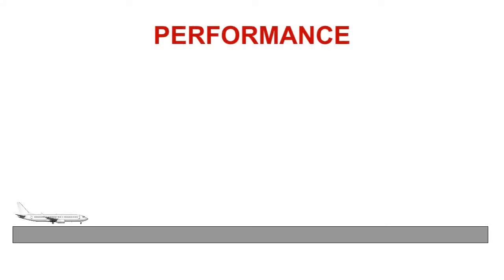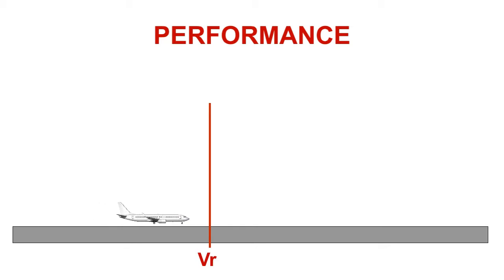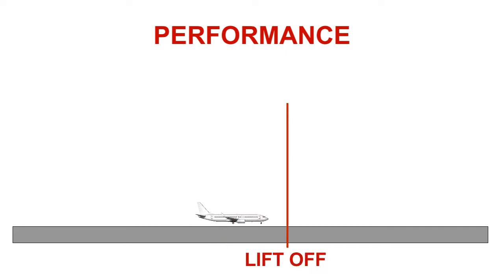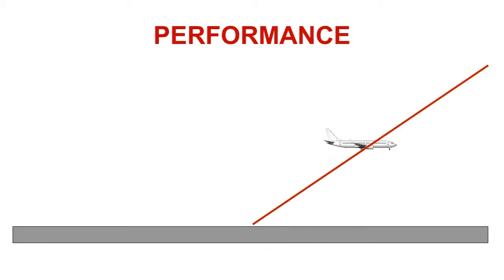Before we look at V2, we first need to look at some simple legal performance requirements for a commercial airliner. This will show the importance of V2. During the take-off roll, the aircraft will accelerate to V1. If the pilot decides to continue, the aircraft will accelerate to V-rotate, where the pilot starts the lift-off process. At some point further down the runway, the aircraft will lift off and start to climb. The aircraft will follow a climb angle, as shown.